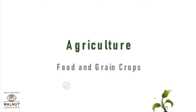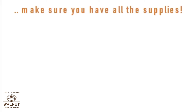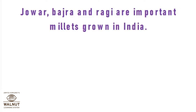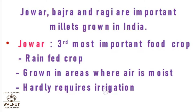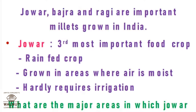Today we are going to see some food grains and food grain crops. First is millet, which is also known as coarse grain. The examples are jawar, bajra, and ragi — important millets grown in India. They have great nutritional value. First is jawar, the third most important food crop in India. It is a rain-fed crop, grown in areas where the air is moist, and hardly requires irrigation.